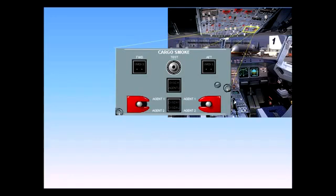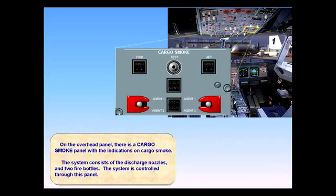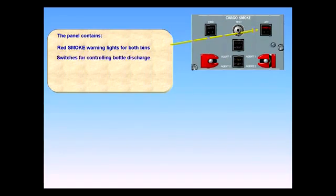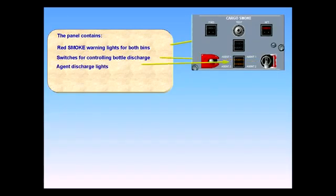On the overhead panel, there is a cargo smoke panel with the indications on cargo smoke. The system consists of the discharge nozzles and two fire bottles. The system is controlled through this panel. The panel contains red smoke warning lights for both bins, switches for controlling bottle discharge, agent discharge lights, and a one-hour warning advising discharge of the second fire bottle.